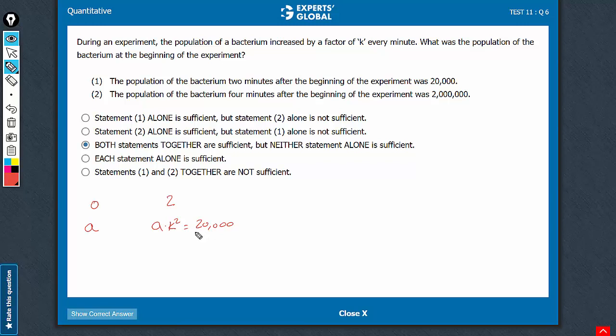Even if you think that it's about the population of something, so a as well as k should be integers, still you will find multiple cases. Something like a equals 200 and k equals 10, that's one case. Or something like a equals 5,000 and k equals 2. So after 2 minutes it becomes 5,000 into 2 squared, 20,000. The point is that one equation, two variables, you cannot solve it. This was just to explain. You don't have to do so much math. Statement 1 is not sufficient.